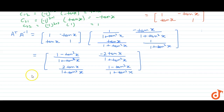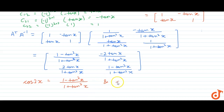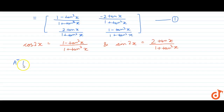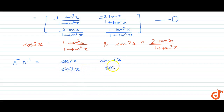Now we use the trigonometric identities: cos2x = (1 - tan²x)/(1 + tan²x) and sin2x = 2tan x/(1 + tan²x). Substituting these values into the matrix, we get A transpose into A inverse equals [cos2x, -sin2x; sin2x, cos2x].